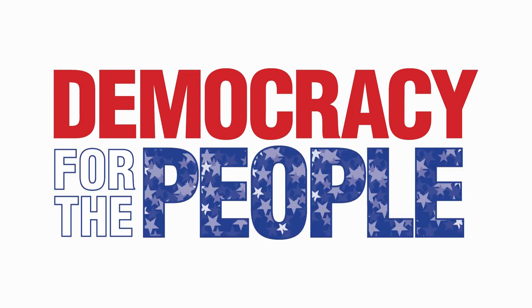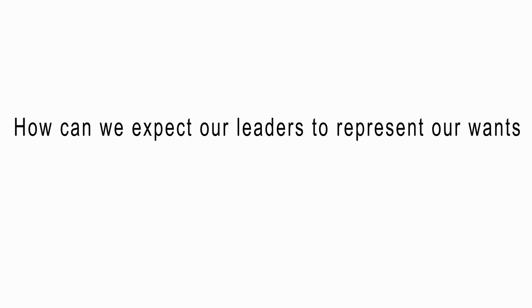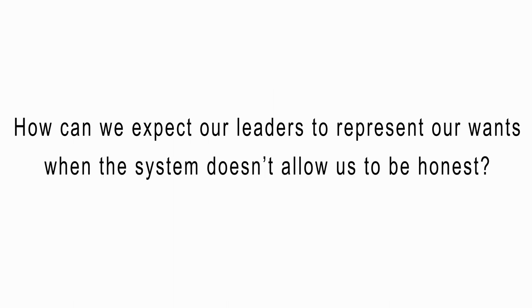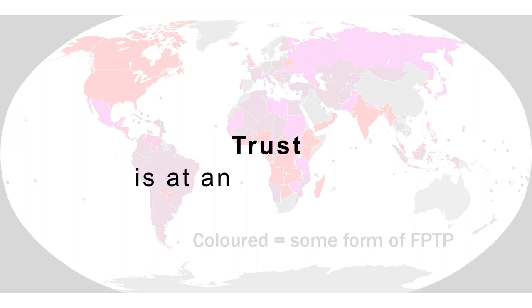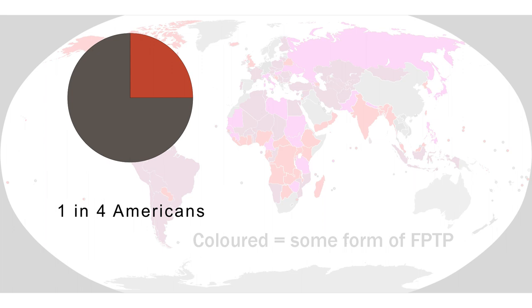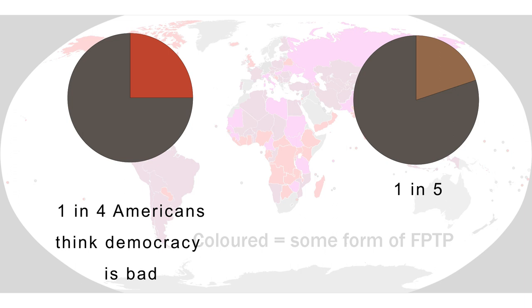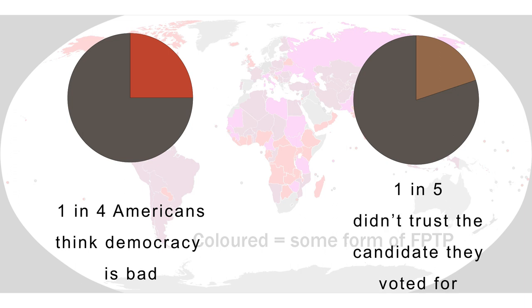Since democracy is all about representing the wants of its citizens, how can we expect our leaders to represent our wants accurately when the system doesn't allow us to be honest? Today, all across the world, trust in governments is at an all-time low. A survey shows that one in four Americans think that democracy is bad or very bad. In 2016, 20% of voters for Trump and Clinton didn't trust the candidate they voted for, and voted for them anyway.